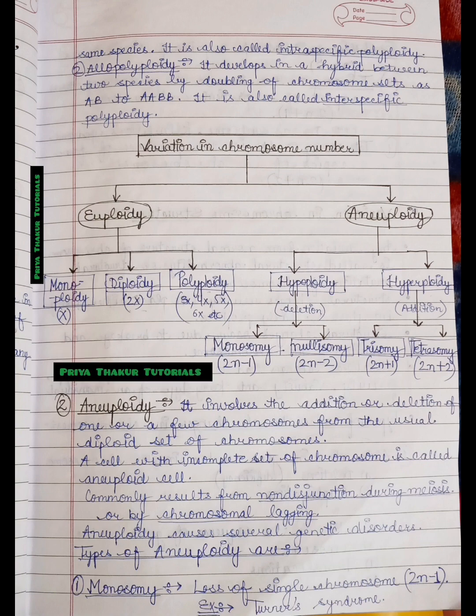The second type is aneuploidy. It involves the addition or deletion of one or a few chromosomes from the usual diploid set of chromosomes. Either there will be chromosome set addition or chromosome set deletion. Aneuploidy involves the addition or deletion of one or a few chromosomes from the usual diploid set of chromosomes. A cell with incomplete set of chromosomes is called the aneuploid cell. It commonly results from nondisjunction during meiosis or by chromosomal lagging. Aneuploidy causes several genetic disorders.